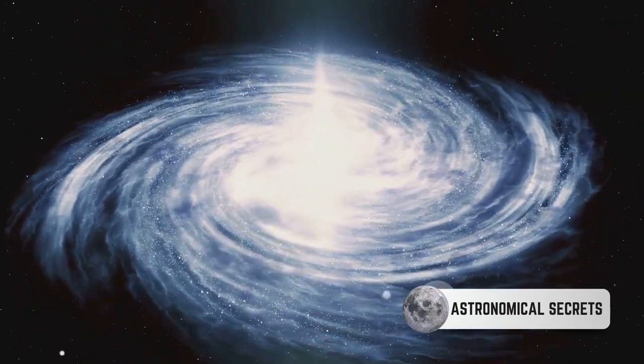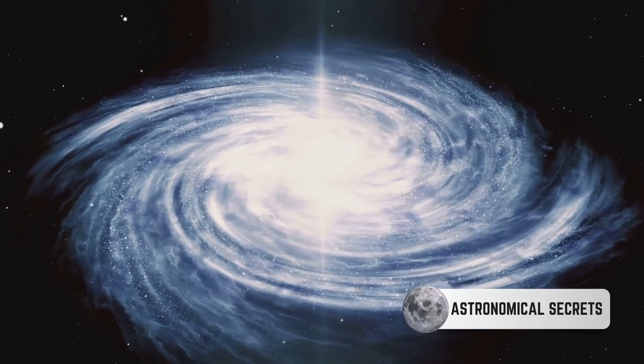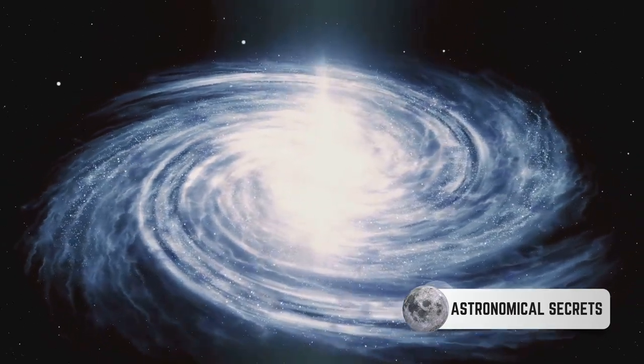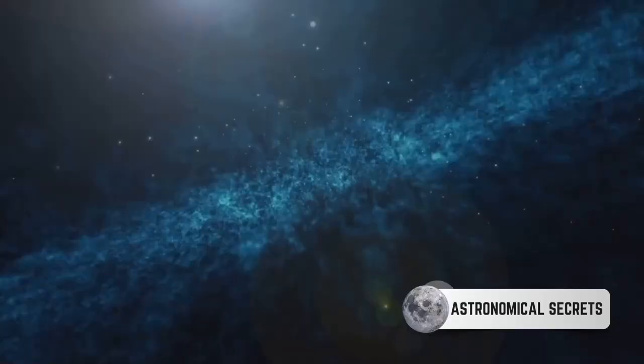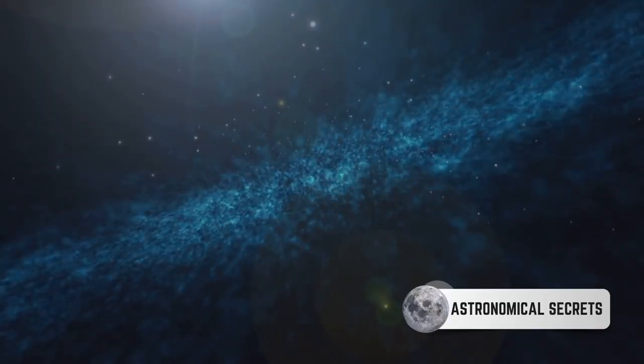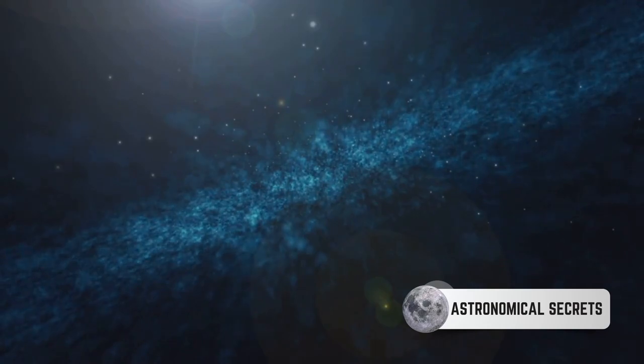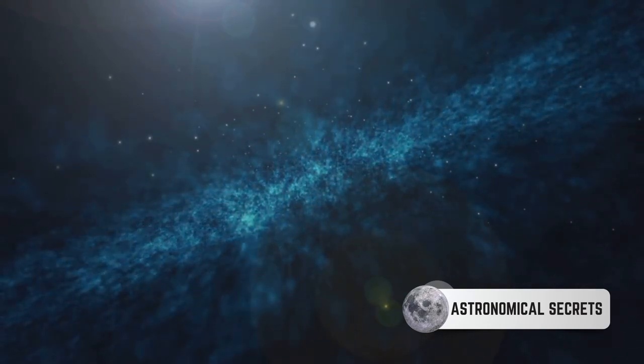Surrounding this central hub are the spiral arms, the suburbs of our galactic city, where new stars are born and where we, along with our solar system, live. But that's not all. Enveloping this city of stars is the halo, like a cosmic aura, home to clusters of ancient stars.